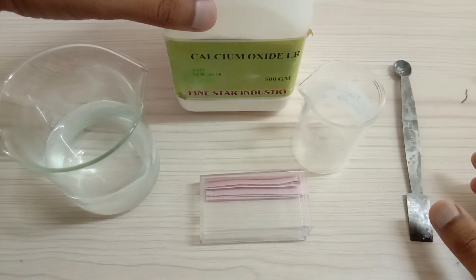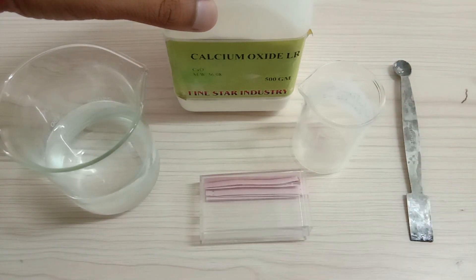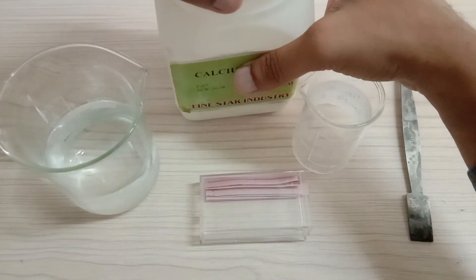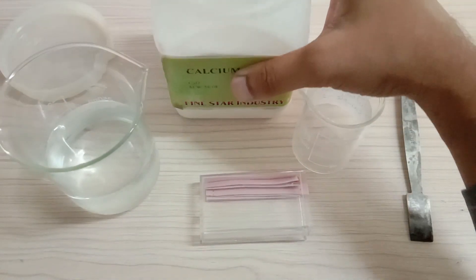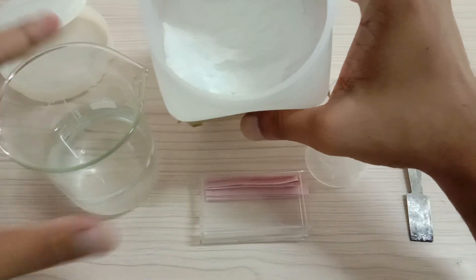This is a small beaker in which I am going to perform the experiment. So now, this calcium oxide is a white color powder. Let me show it to you, it's a white color powder, right.